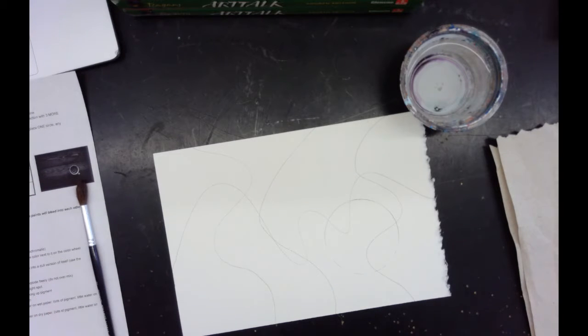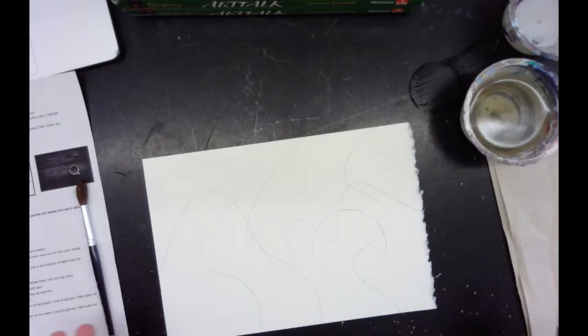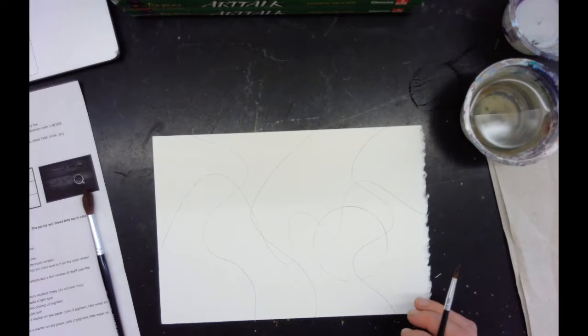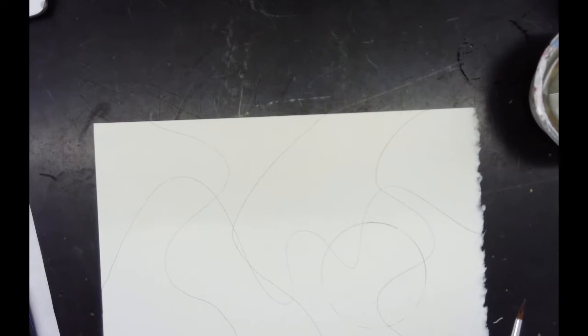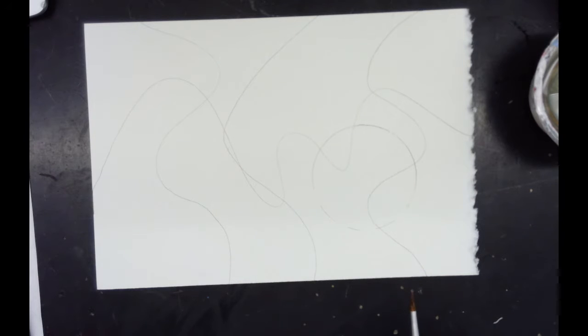All right, so to start with my wash I want to pick a section that's not going to be right in the middle of things, because wherever I paint I'm not going to be able to paint in that area again until it dries. So I'm going to pick a decent size area, not a tiny area, but something that's not right in the middle of things.